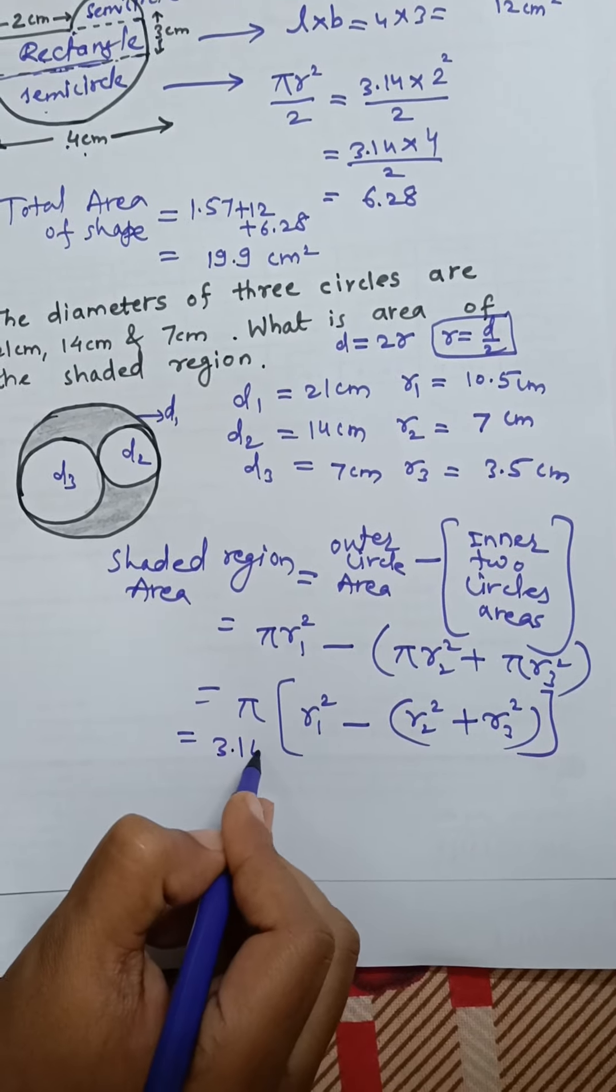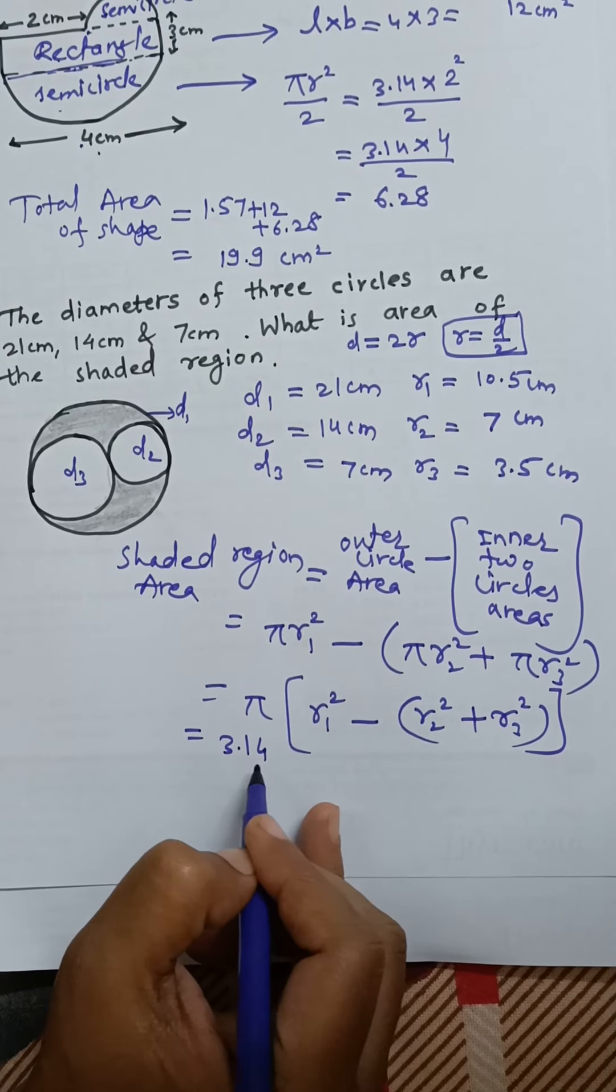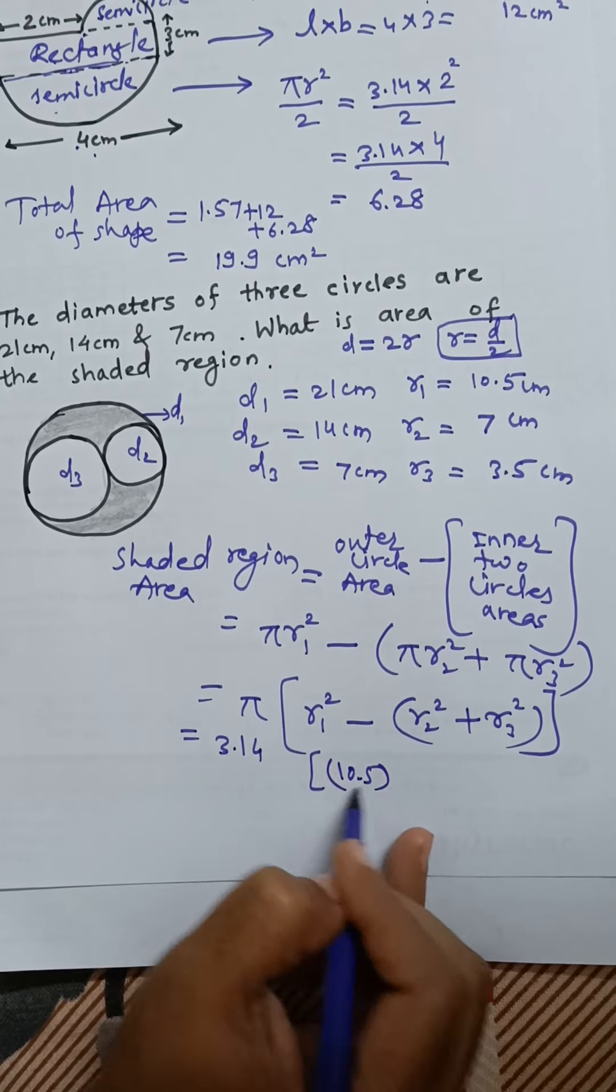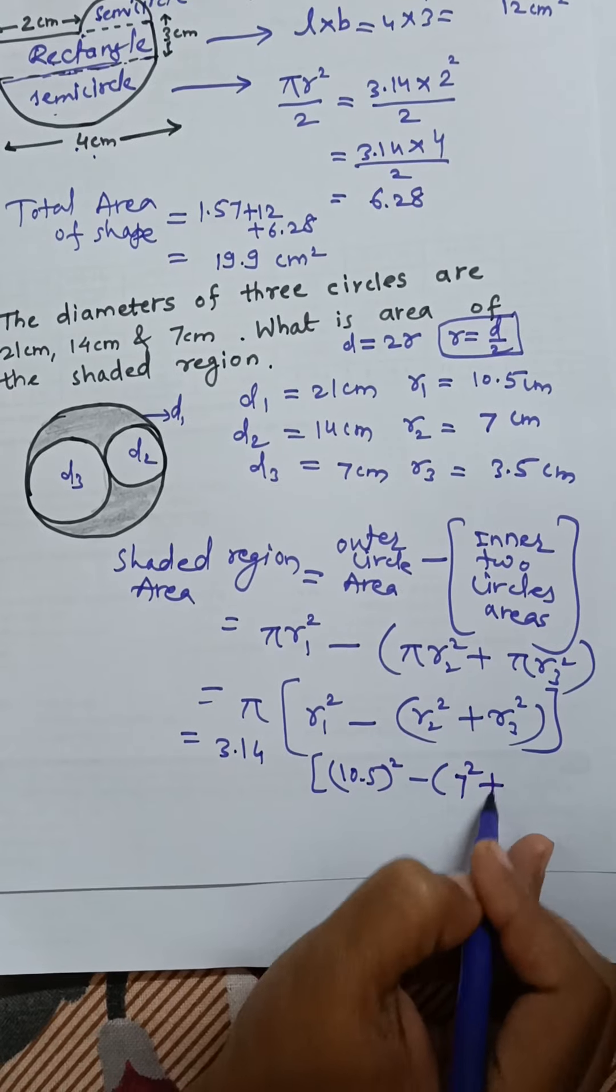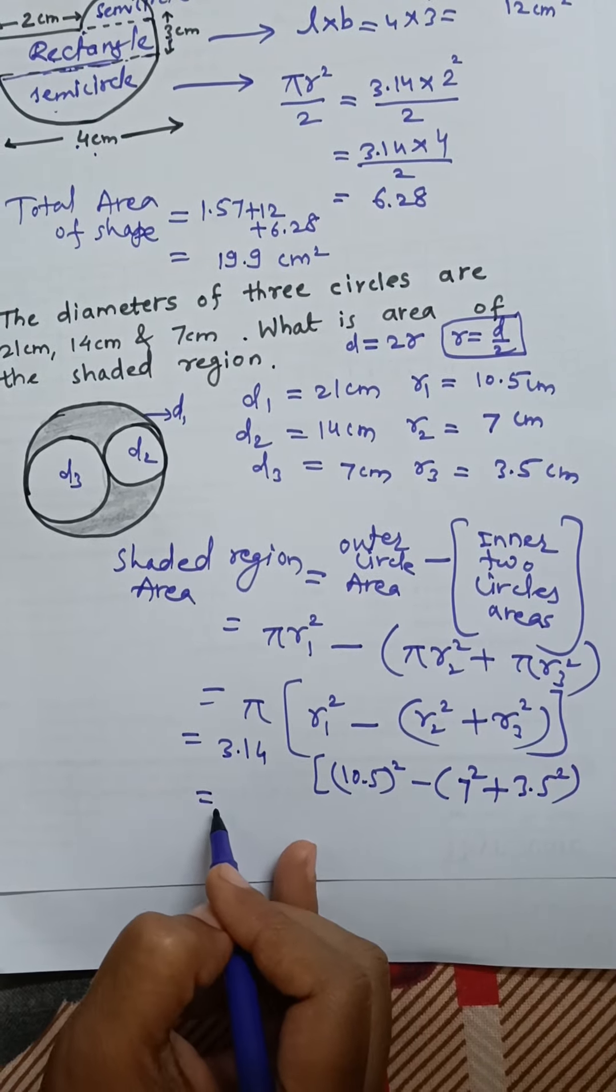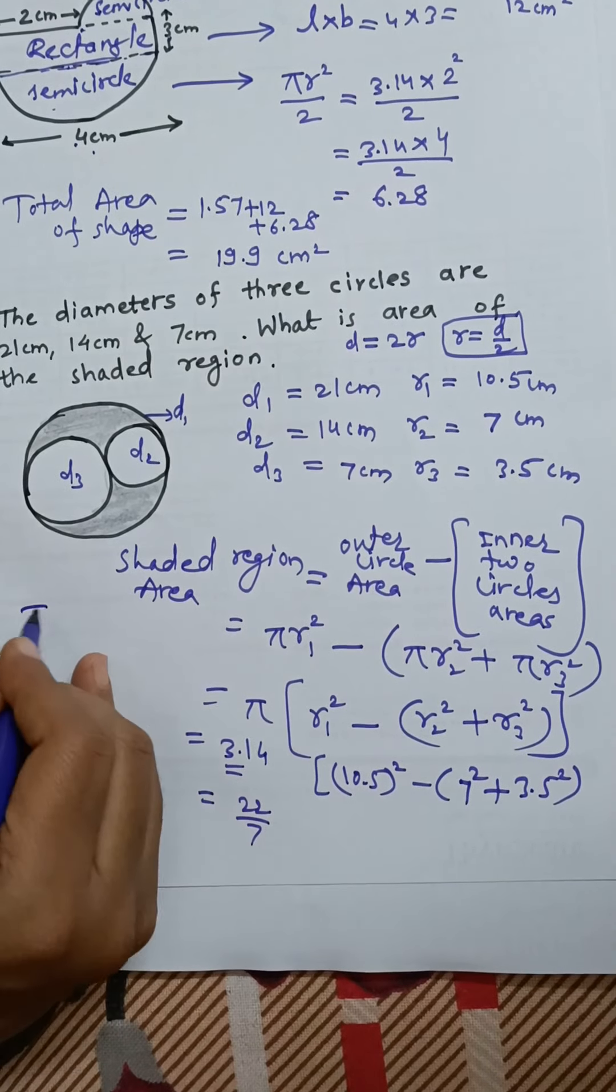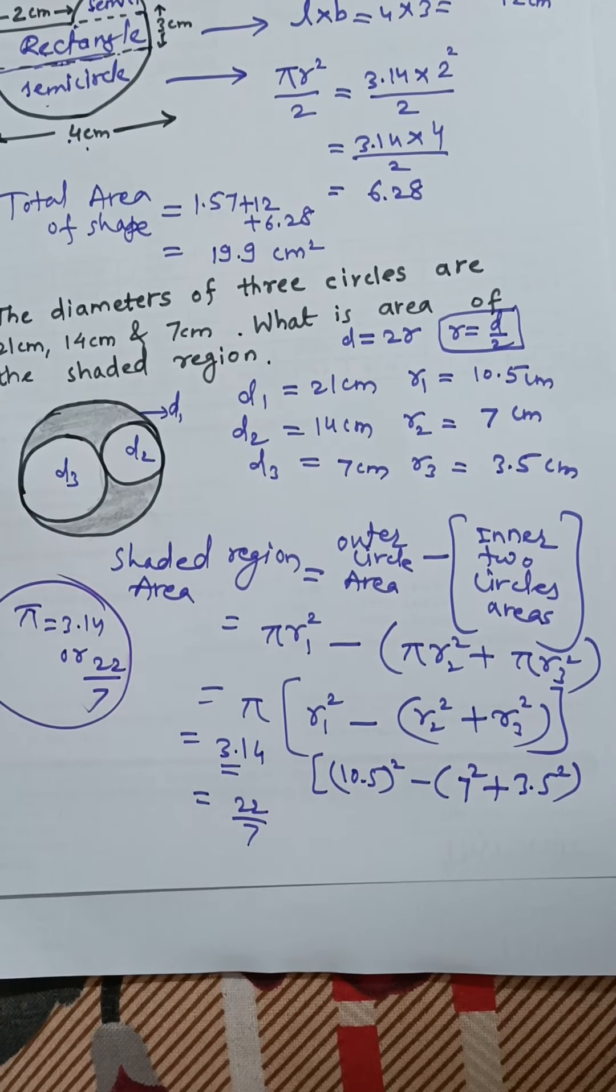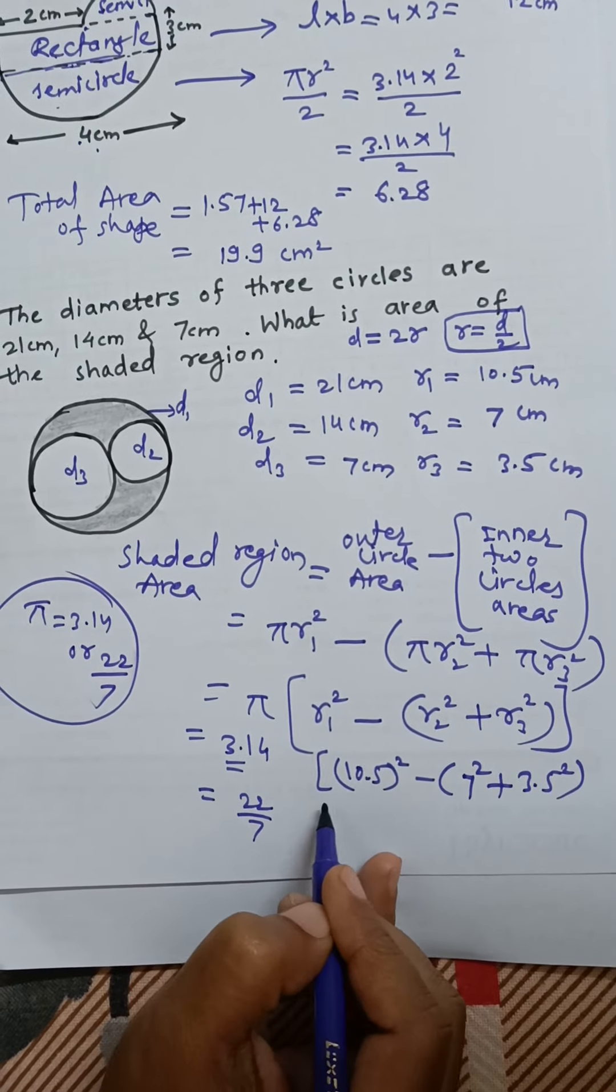Pi's value is 3.14 or you can take 22 by 7. r1 is 10.5 whole square minus 7 square plus 3.5 square. If you want, you can take 22 by 7. Pi's value can be 3.14 or 22 by 7, no matter.